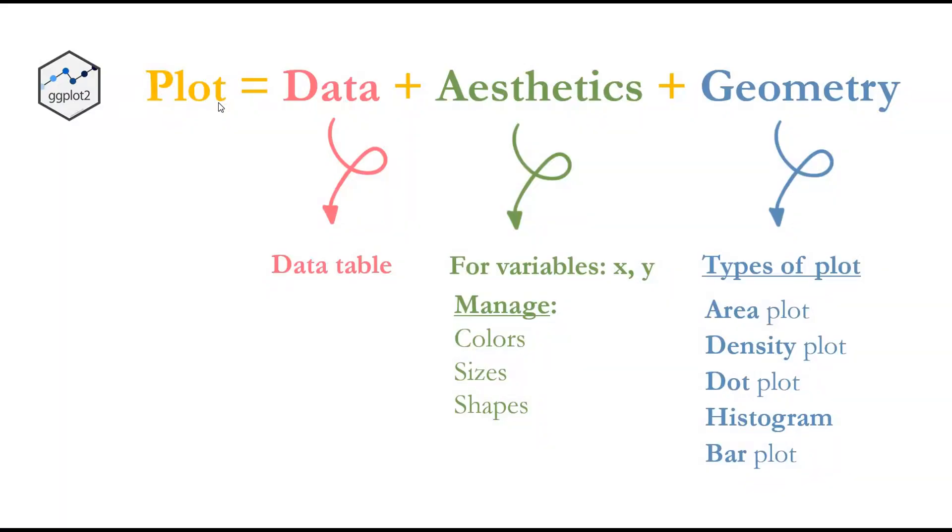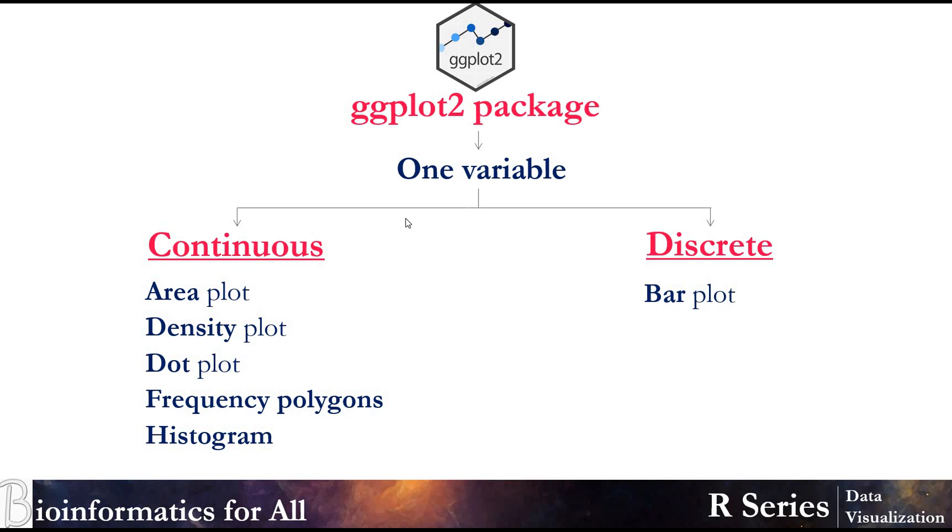To be able to generate a ggplot, we need to have data - it can be a table, it can be just one variable as we will discuss today. We need to specify the aesthetics - the variables X and Y. So if we have a table with different variables, we need to specify which variables we want to put in our plot. And the geometry - what type of plot do we want: area plot, density plot, or a histogram? Also under the aesthetics we can manage the color, size, and shape of the variable.